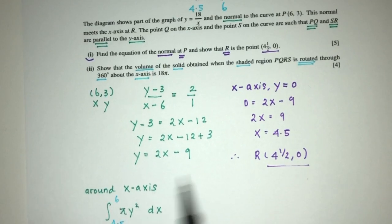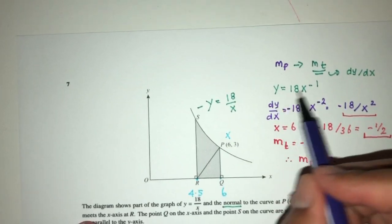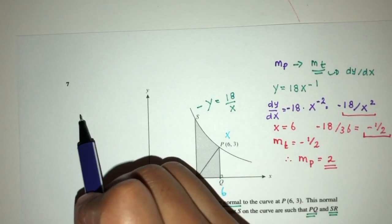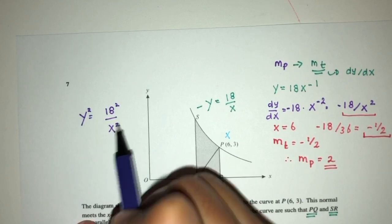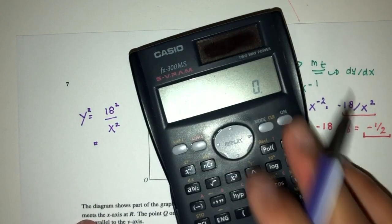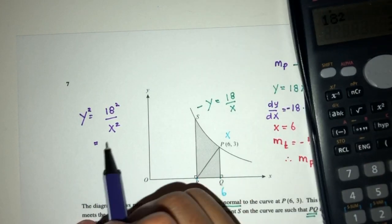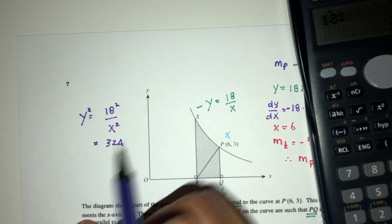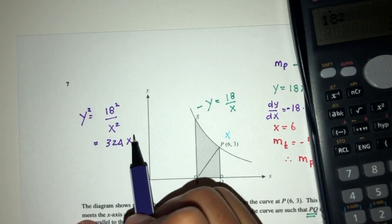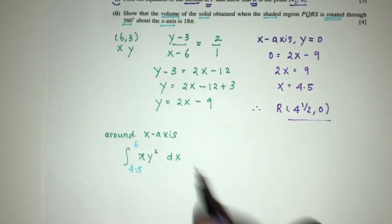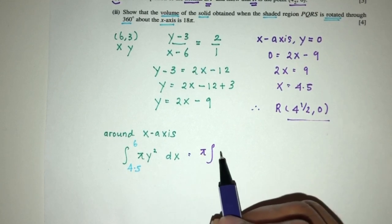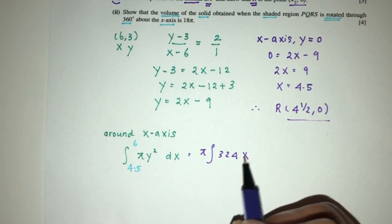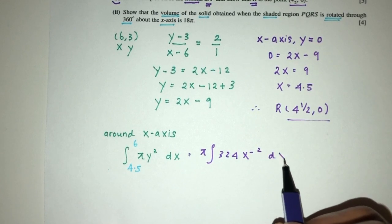Now y equals 18 over x. Y squared will be 18 squared over x squared, which is 324 over x squared. We can bring this up as x to the power minus 2. That will be pi times 324 x to the power minus 2 with respect to x, from 6 to 4.5.